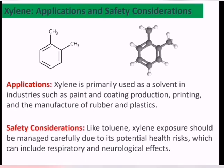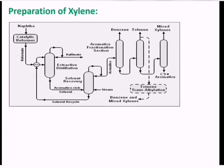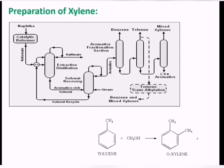For the safety consideration, like toluene, xylene exposure should be managed carefully due to the potential health risks, which include respiratory and neurological effects. For the preparation, it can be prepared from catalytic reforming. Similar to the production of benzene, xylene can be obtained from catalytic reforming of naphtha or other hydrocarbon feedstocks. The process yields a mixture of xylene isomers including ortho-xylene, meta-xylene and para-xylene.